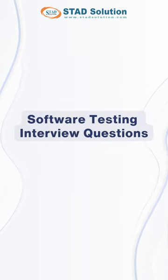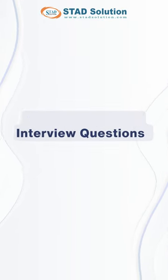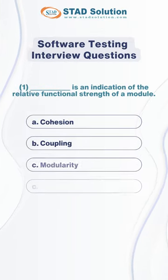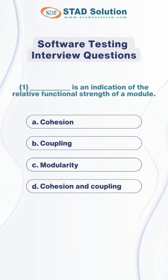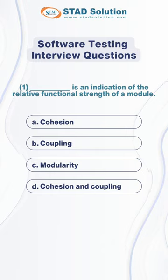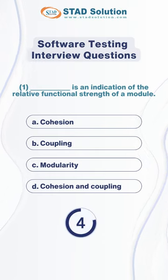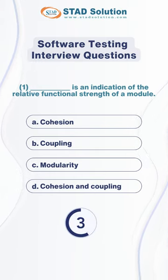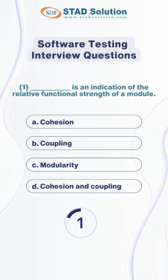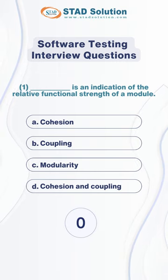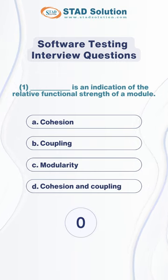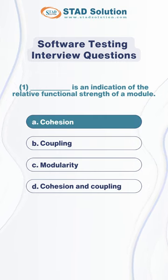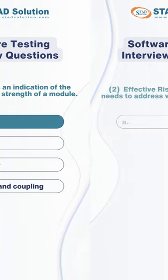Software testing interview questions with answers. An indication of the relative functional strength of a module — the correct answer is cohesion.